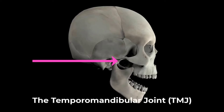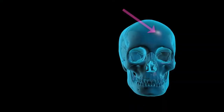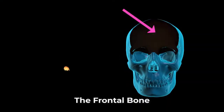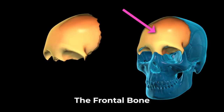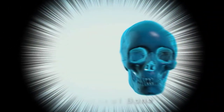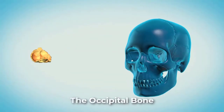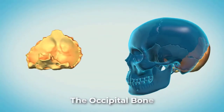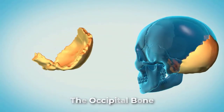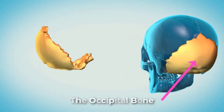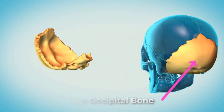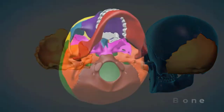or TMJ. The frontal bone is the single bone that forms the forehead. The occipital bone is the single bone that forms the posterior skull and the posterior base of the cranial cavity.